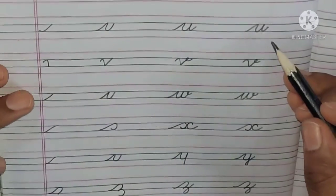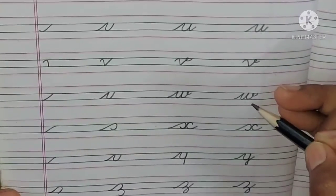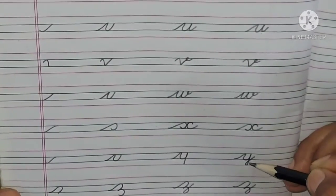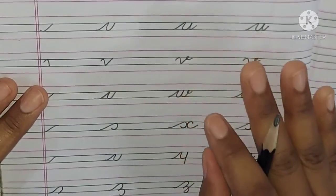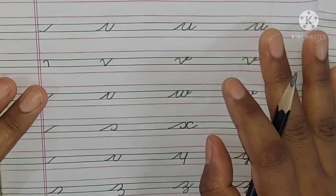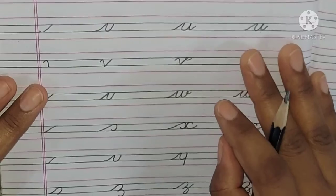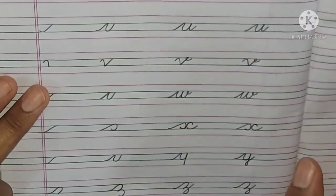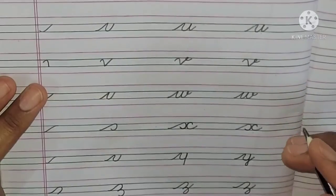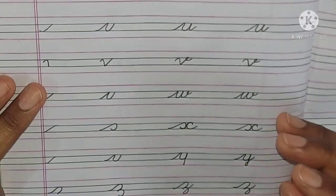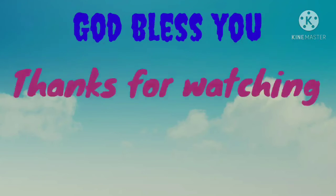Students, today we learnt letters U, V, W, X, Y and Z. You have to write these in your easy writing book and also in your English copy. I hope you all have learnt cursive small letter writing well. So students, keep on practising to improve your writing. God bless you. Thanks for watching.